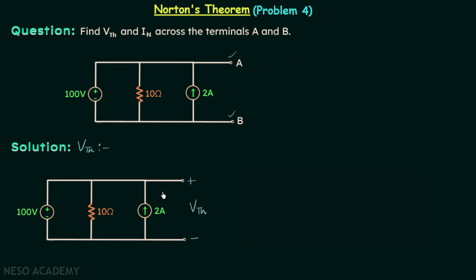So this is our Vth. Now I will apply KVL in this loop. I will have plus Vth, then minus 100 volts equal to zero. From here, Vth equals 100 volts.